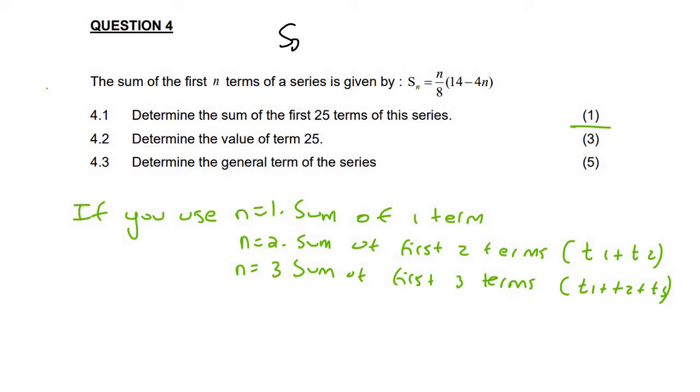So we can work out S25 by just putting in a 25 there like that. And that's going to give us negative 268.75.